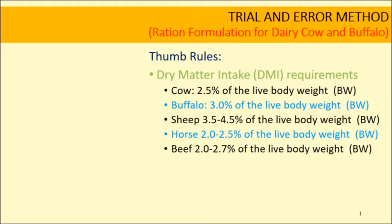In the trial and error method, first we calculate the dry matter intake of an animal. Exact dry matter intake values can be obtained from NRC tables, or you can follow these thumb rules taken from those tables as average values. A cow can consume up to 2.5% of their live body weight as dry matter, so a 100 kg animal requires 2.5 kg of dry matter. For buffalo it is 3%, sheep 3.5 to 4.5%, horse 2 to 2.5%, and beef animals 2 to 2.7% of live body weight.